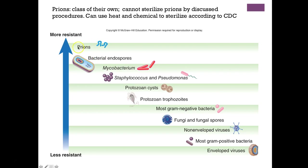One we haven't talked about are prions. Prions are in a class of their own and cannot be sterilized by the procedures discussed in this chapter. They are resistant to heat and chemicals, though we can try a combination of agents. The CDC — Centers for Disease Control and Prevention — must be contacted if anything is contaminated by prions so they can give specific sterilization instructions.